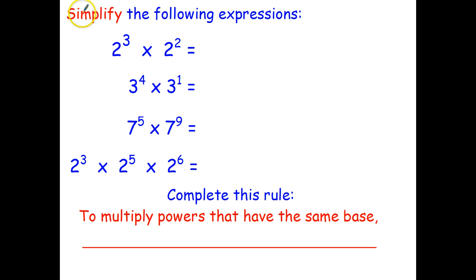So the question says simplify the following expressions. So I've got 2 to the power of 3 times 2 to the power of 2. Well the best way to actually do this to start with is to expand it. So 2 to the power of 3 times 2 to the power of 2. Well I've got all together 5 twos multiplied together.